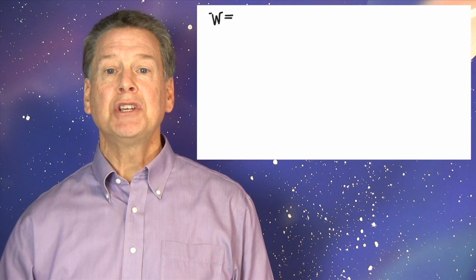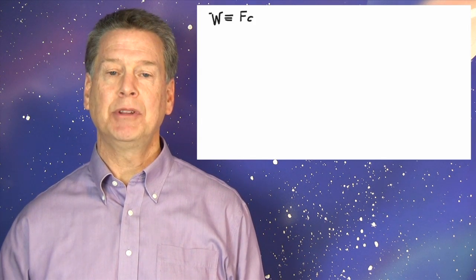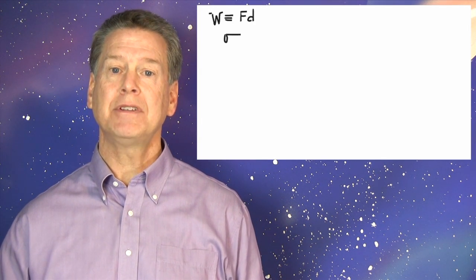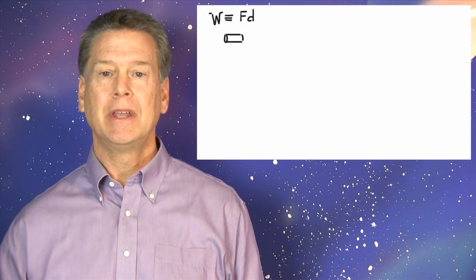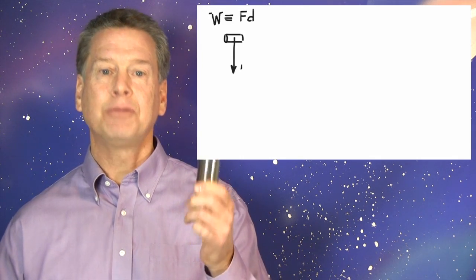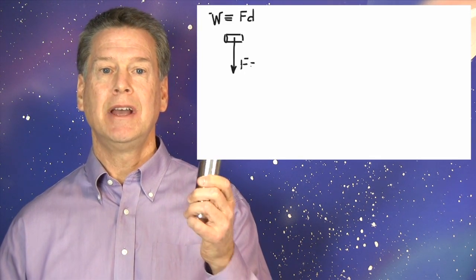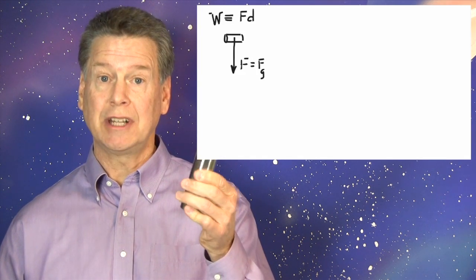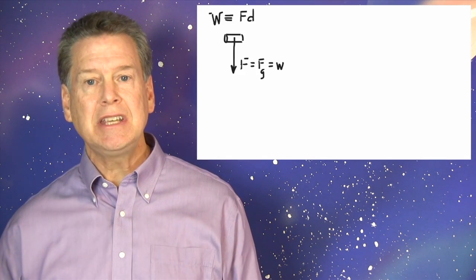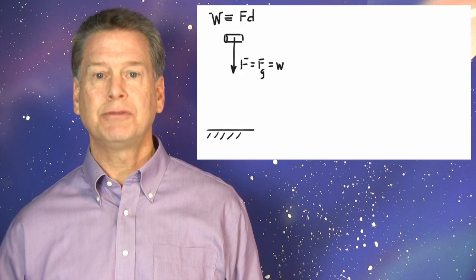Our preliminary definition of work says that capital W is defined as F times D. Here, F is the force of gravity on the kilogram, that is, its weight, little w. And D is the distance through which the force acts.